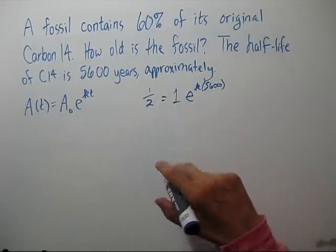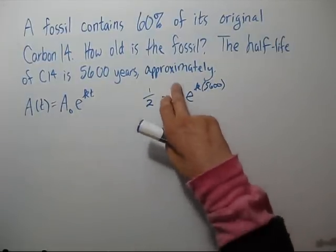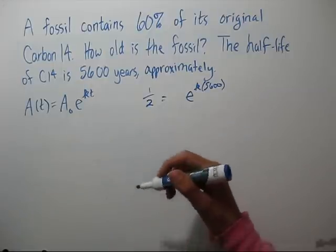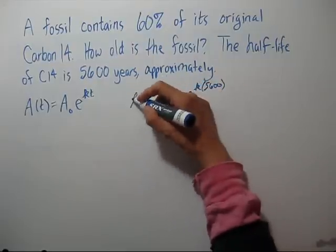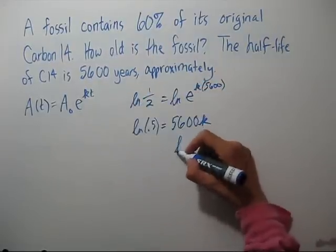The one doesn't make any difference. So it's multiplication. Let's take the natural log of both sides to get the k out of the exponent. And let's solve for k.